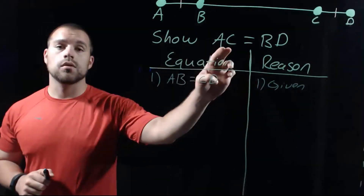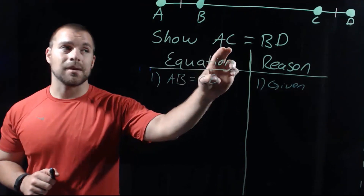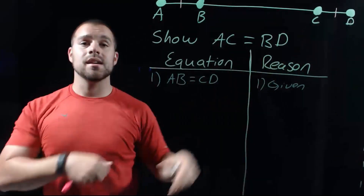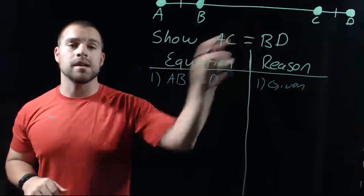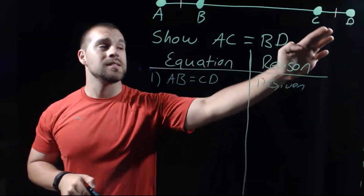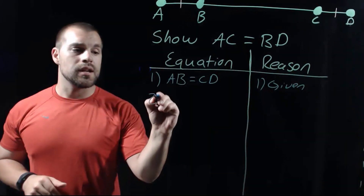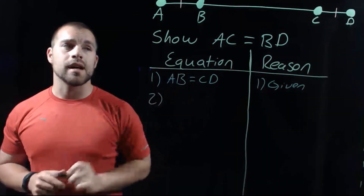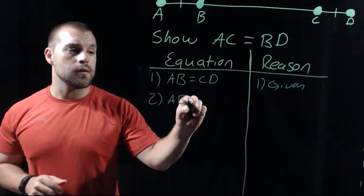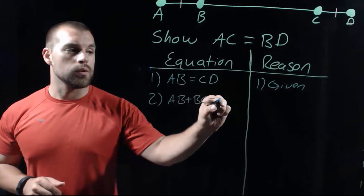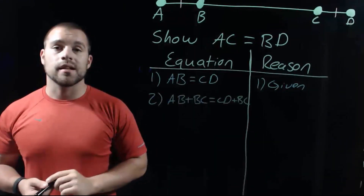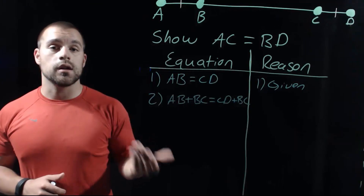We're building towards the AC segment and the BD segment. AC is made up of two smaller segments AB and BC, and BD is made up of two smaller segments CD and BC. So we want to add the BC segment to both sides of the equation, giving us: AB plus BC equals CD plus BC. The property that lets us add something to both sides is the addition property.